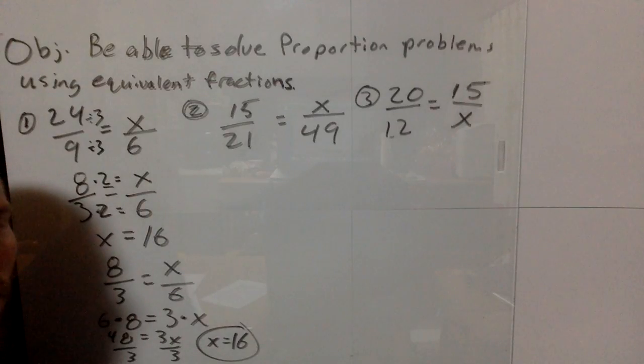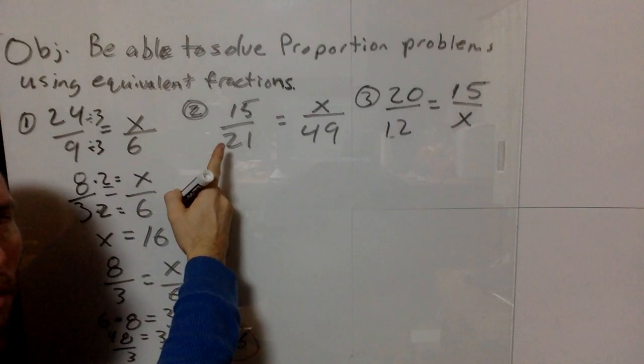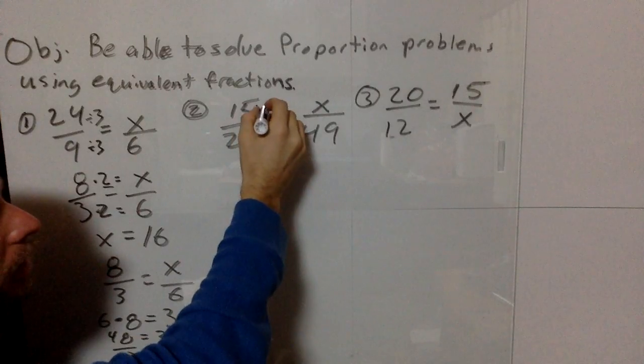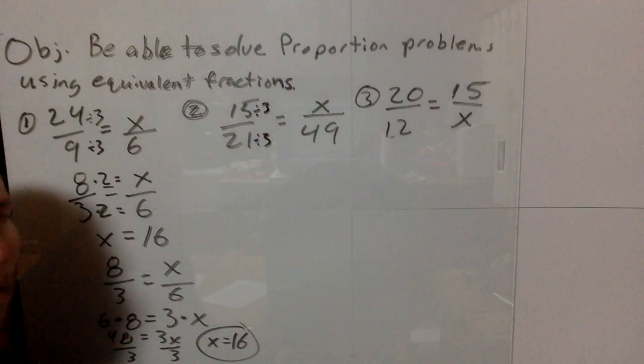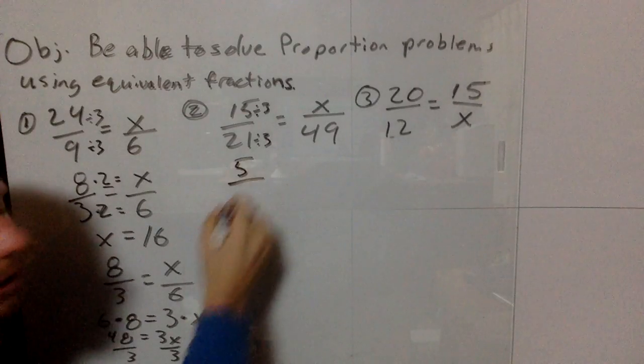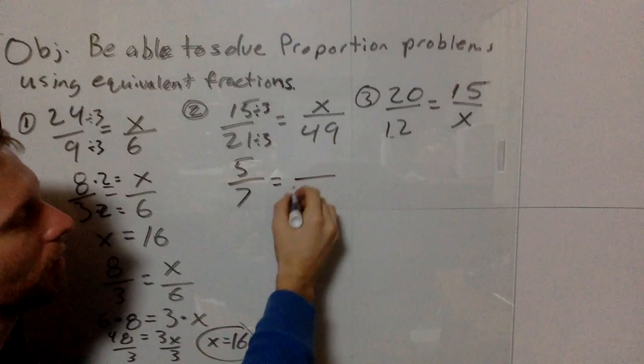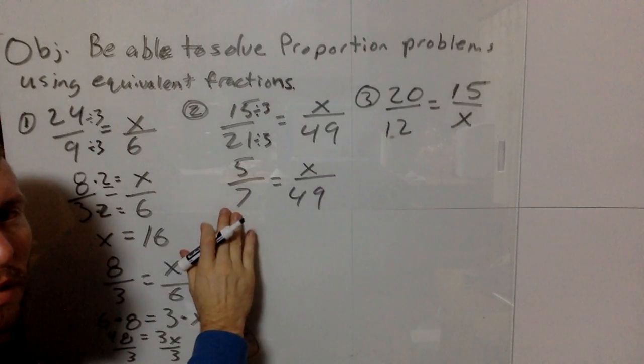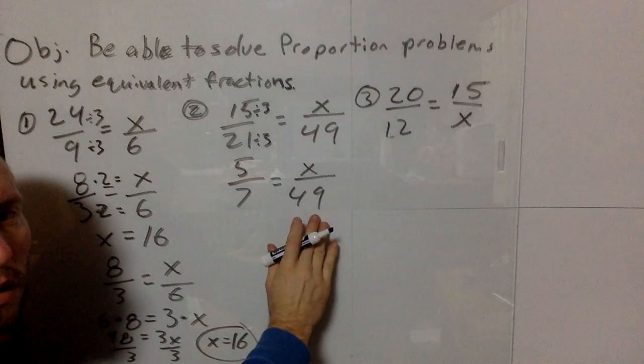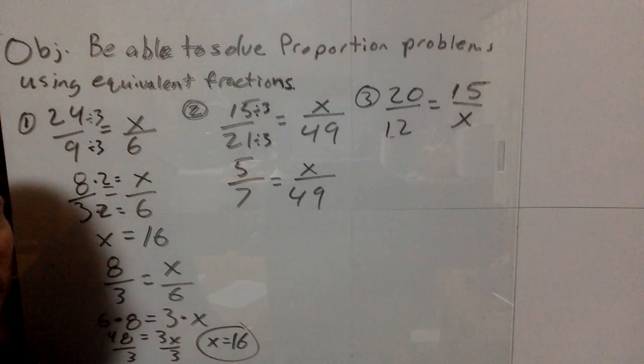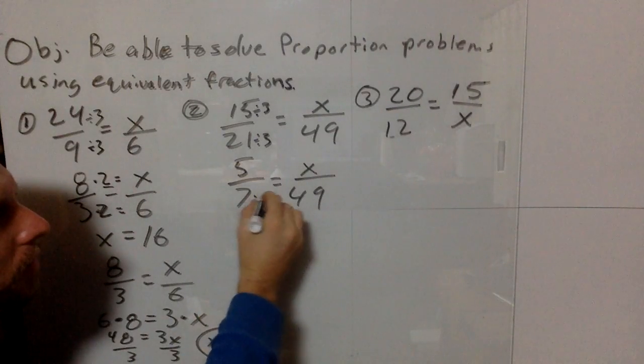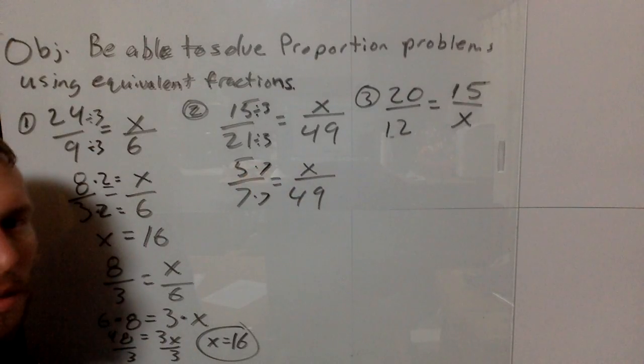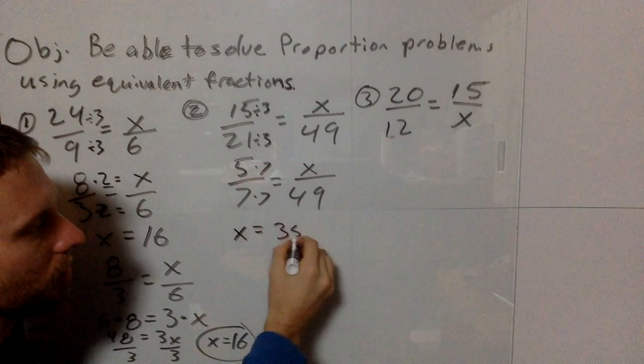Let's do number 2: 15 over 21 equals x over 49. We can simplify 15 over 21 by dividing by 3. 15 divided by 3 is 5, and 21 divided by 3 is 7, which equals x over 49. The easiest way is to find what number times 7 gives 49. If we multiply 5 times that same number, we get x. 7 times 7 is 49, and 5 times 7 is 35, so x equals 35.